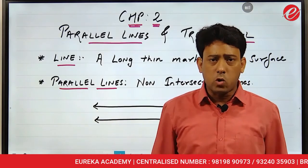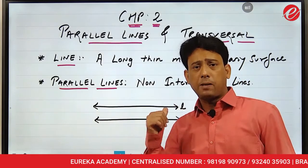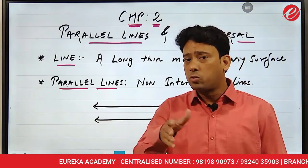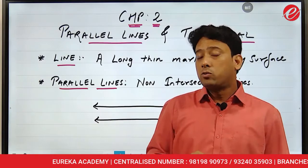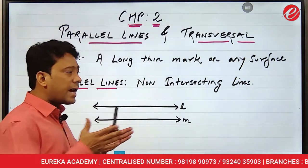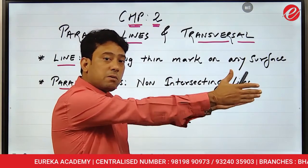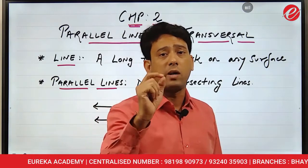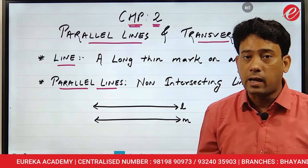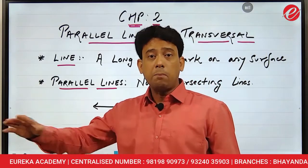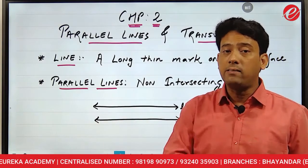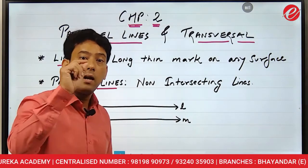Take any plane surface — like the board you see in front of you, which is a flat smooth surface, that's a plane. On any plane surface, lines going in the same direction — if they go further and still do not intersect each other at any point, then those two lines are called parallel lines. In any plane, if two lines do not intersect each other, then those lines are said to be parallel lines.